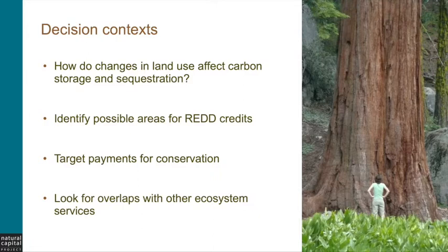Other examples of uses may include a conservation NGO that wants to invest in areas where high levels of biodiversity and carbon sequestration overlap, so the outputs of this model showing where carbon is stored on the landscape would also be helpful for them. Or similarly, a timber company may also want to maximize its return from both timber production and REDD carbon credits. So this model is used in several decision contexts.